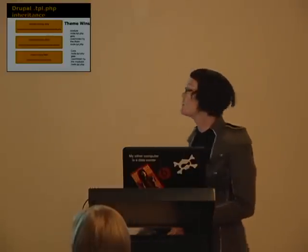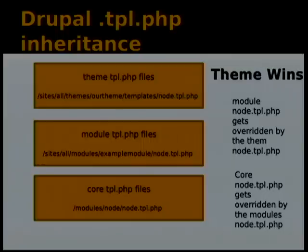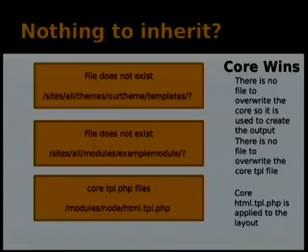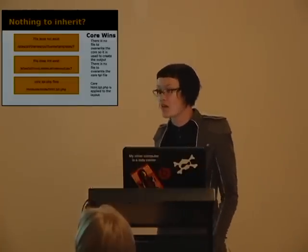So the overwrite process: we've got core tpl.php files as the default, module files next, and themes last. If there's nothing in your theme and it's looking for node, core will apply. But if you've got a node template in your module and also one in your theme, your theme is going to win. HTML.tpl.php is normally pulled from core because you don't really need to include it in your template unless making major structural changes.